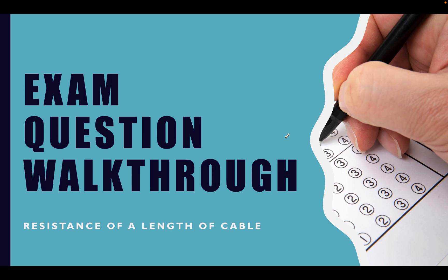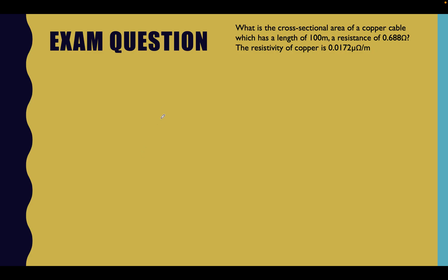This is quite likely when you're getting an exam. So let's read through the questions together. What is the cross-sectional area of a copper cable which has a length of 100 meters? So we've got the length. A resistance of 0.688 ohms. We've got the resistance. It's telling us the resistivity of copper is 0.0172 micro-ohms per meter.